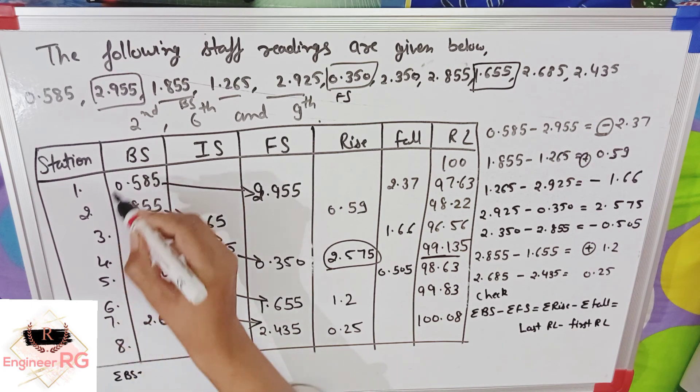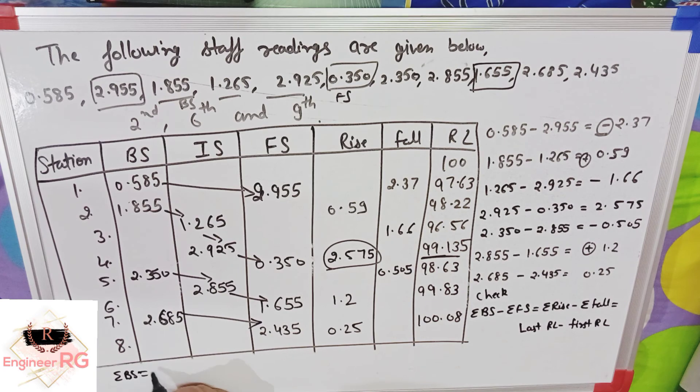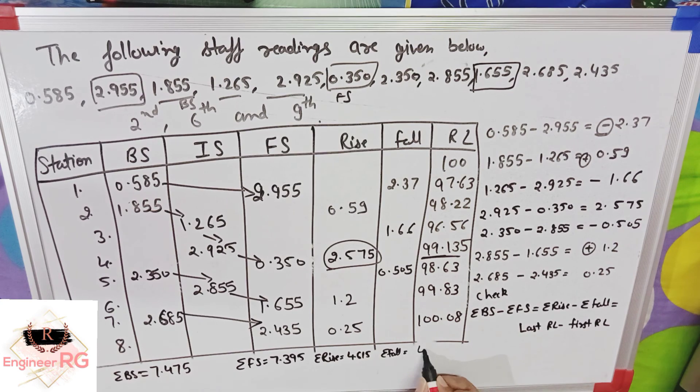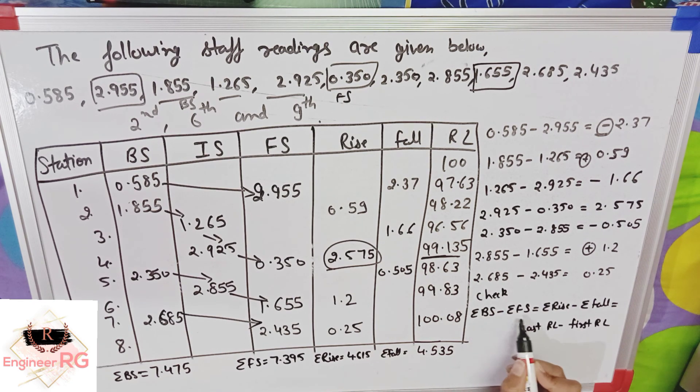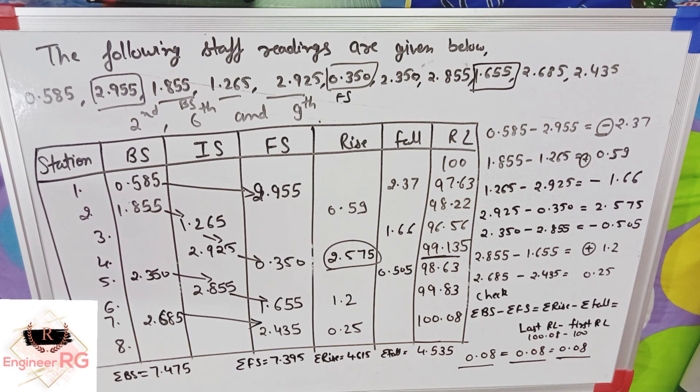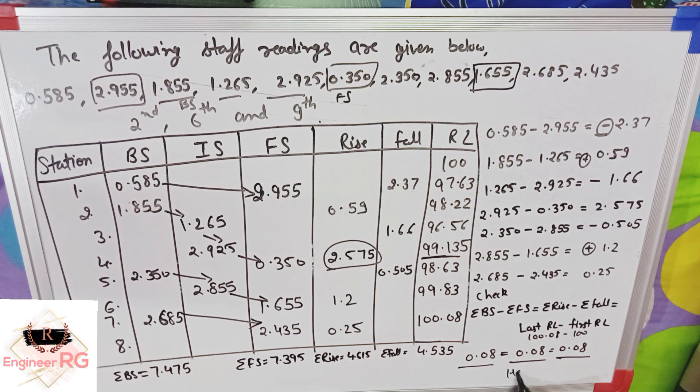Summation of back side is 7.475. Fore side values added equals 7.395. Summation of rise is 4.615. Summation of fall is 4.535. Now we subtract: back side minus fore side value is 0.08, rise minus fall value is 0.08, last RL minus first RL value is 0.08. These three values are the same, so this means that our question we have solved correctly.